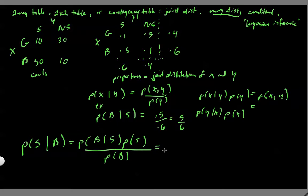And this is equal to the probability of being a boy given that you smoke is 5/6 times the probability of smoking total divided by the probability of being a boy total. These cancel, and we're left with 5/6.